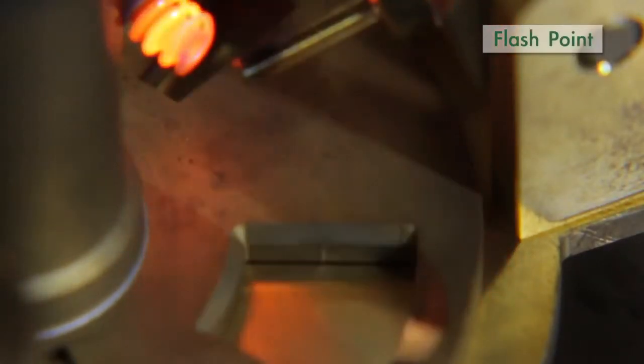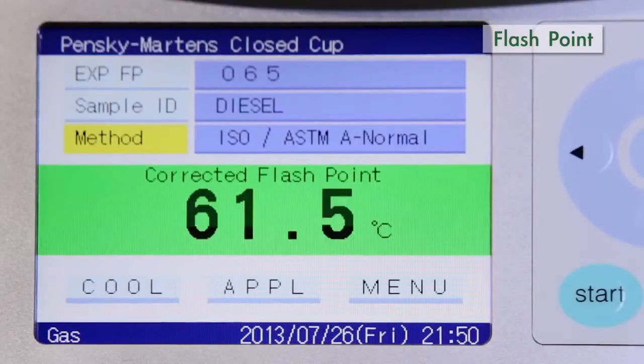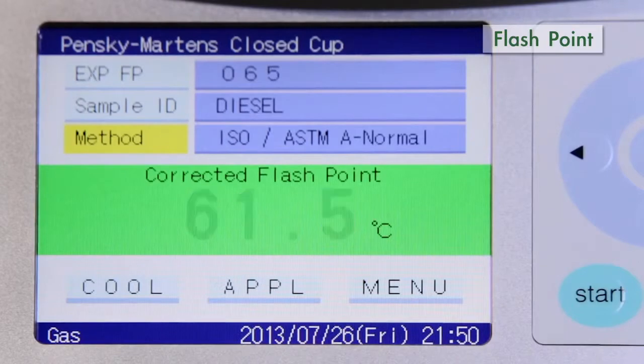Once flash is detected, the ignition source automatically shuts off with the corrected flashpoint displayed on the screen against a green background.